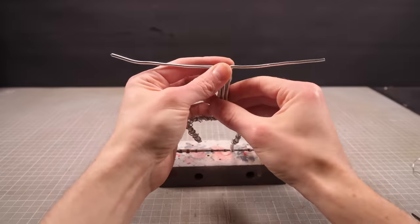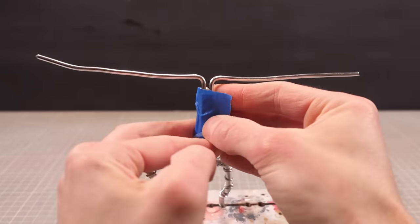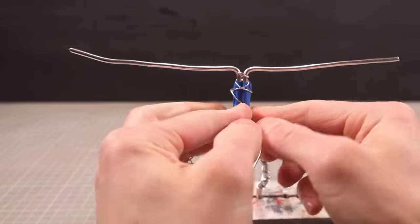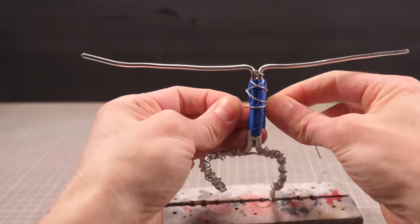His upper body though won't need to be nearly as strong, so I can make his arms out of some thinner wire before beginning to bulk up the body with a layer of aluminium foil.